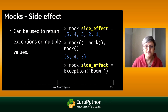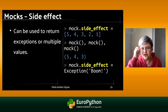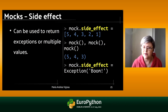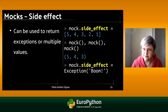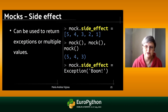You can also use side_effect, which is more flexible. With side_effect, you can put a list of values that are consumed every time the mock is called. For example, with the list [5, 4, 3], every time the mock is called it returns the next item in the list. Using side_effect you can also return an exception from the mock — for example, if you need to test an exception case.